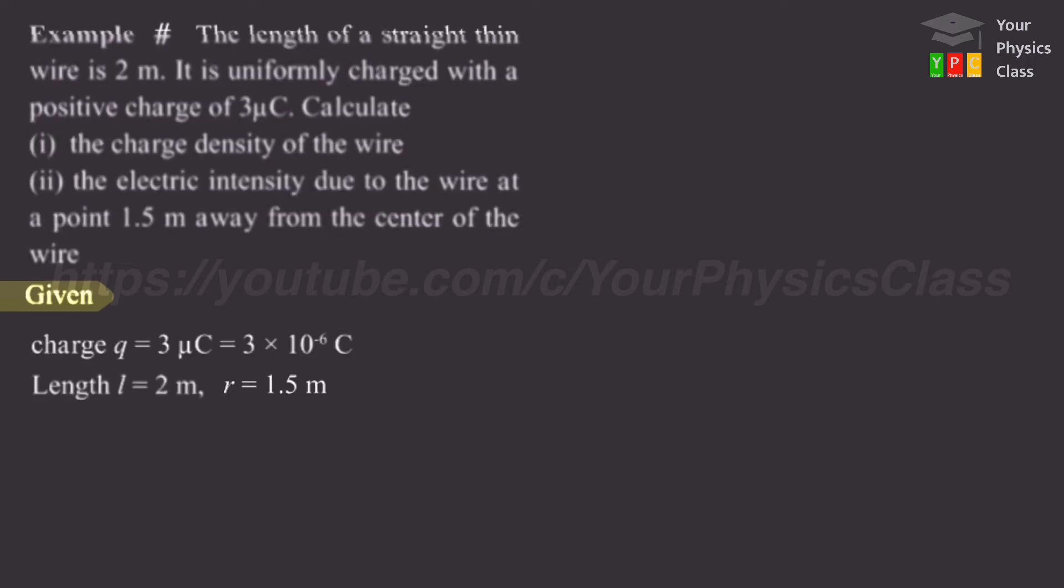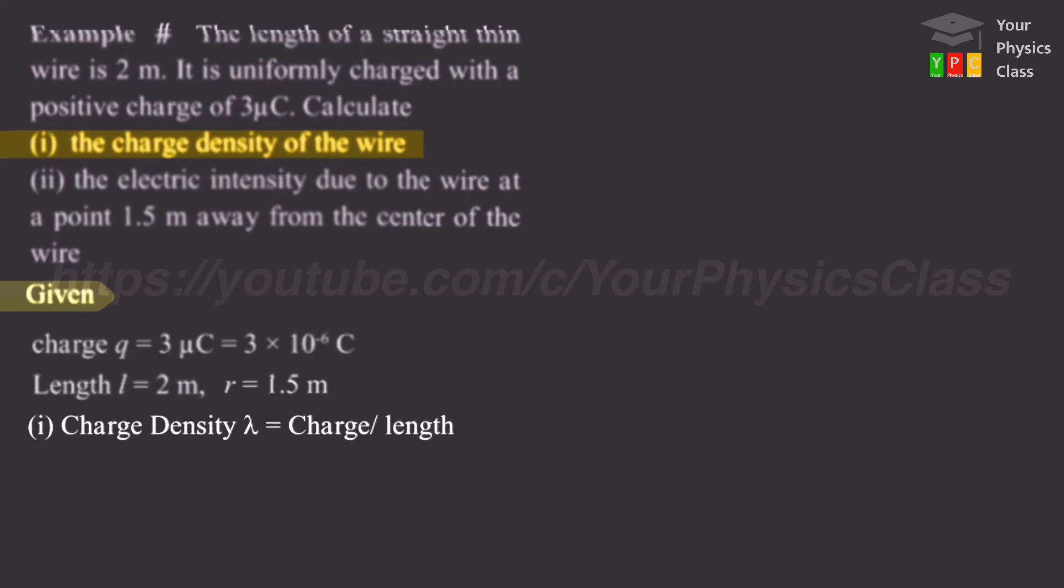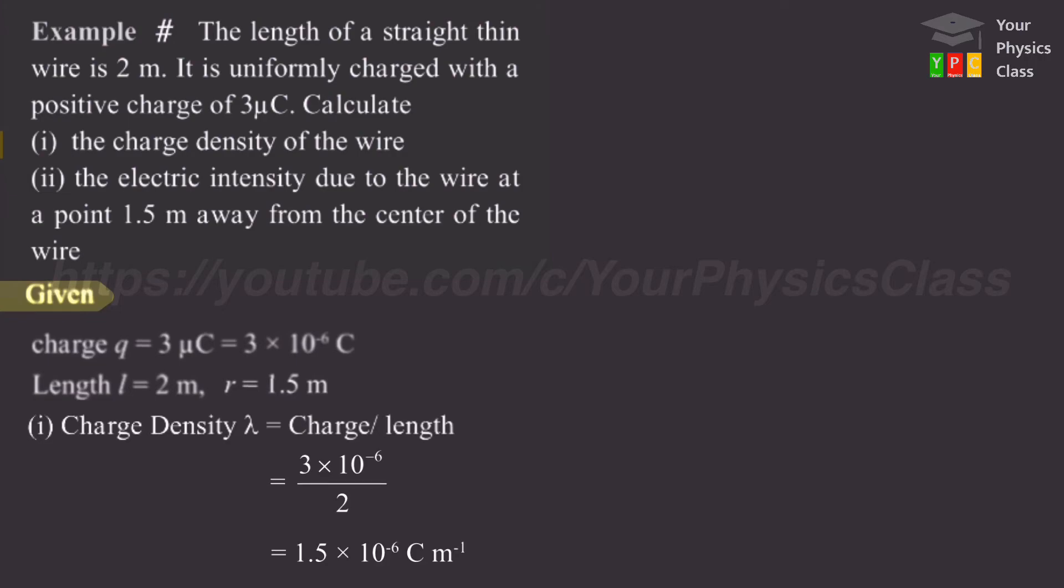So sab se pehle question number 1 hai, to find charge density. Friends, charge density lambda can be determined by charge per unit length. So humare paas formula hoga charge upon length. Charge ki value yahan per hum ne substitute kiya. Length 2 meter hai, uski bhi value hum ne yahan per dal diya. To calculate karne ke baad hame milega 1.5 into 10 raise to -6 coulomb per meter. To ye ho gaya charge density.